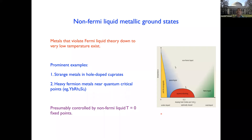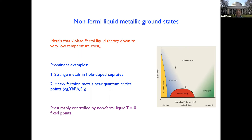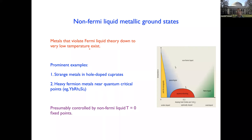A great example of ultra-quantum matter that actually exists in experiments is provided by these non-Fermi liquid metallic ground states. In a number of condensed matter systems, metals that violate Fermi liquid theory down to very, very low temperatures — much lower than microscopic energy scales — exist. The most prominent example is the strange metal region in the hole-doped cuprates. Other prominent examples are heavy fermion metals near quantum critical points, in materials like ytterbium rhodium silicide, cerium copper gold, and so on.